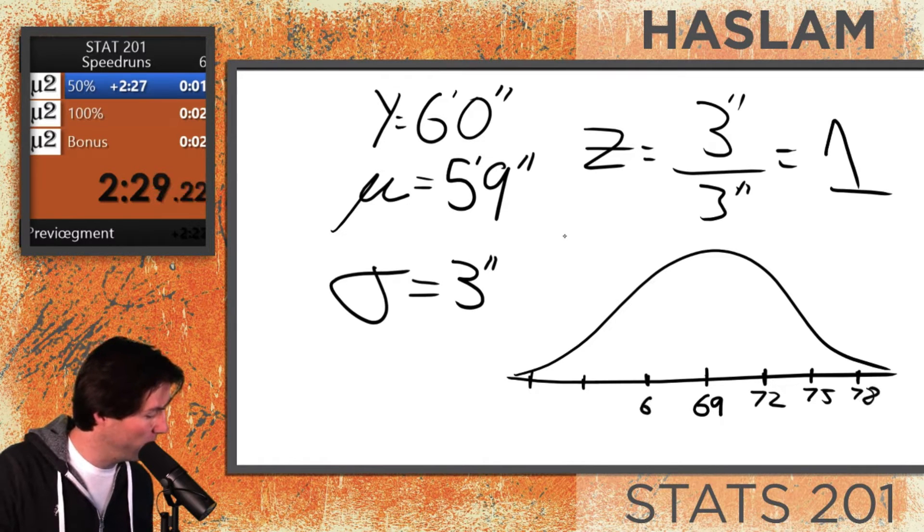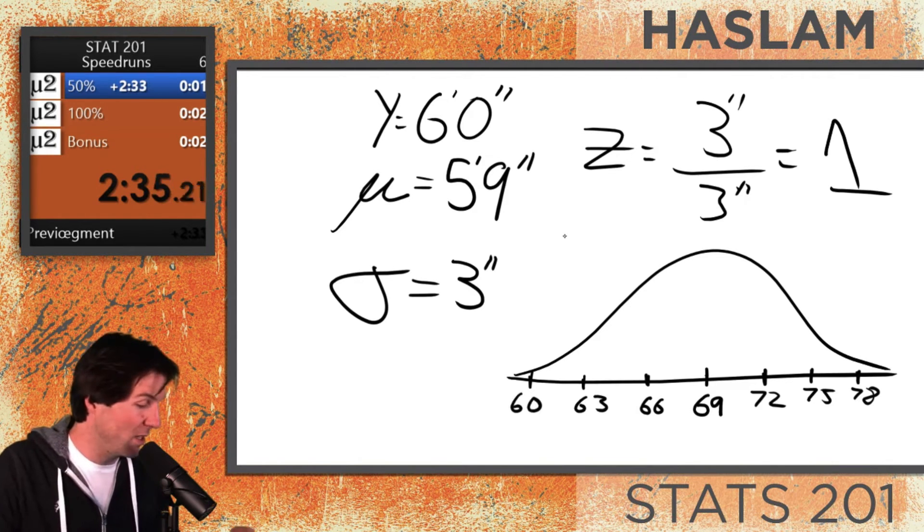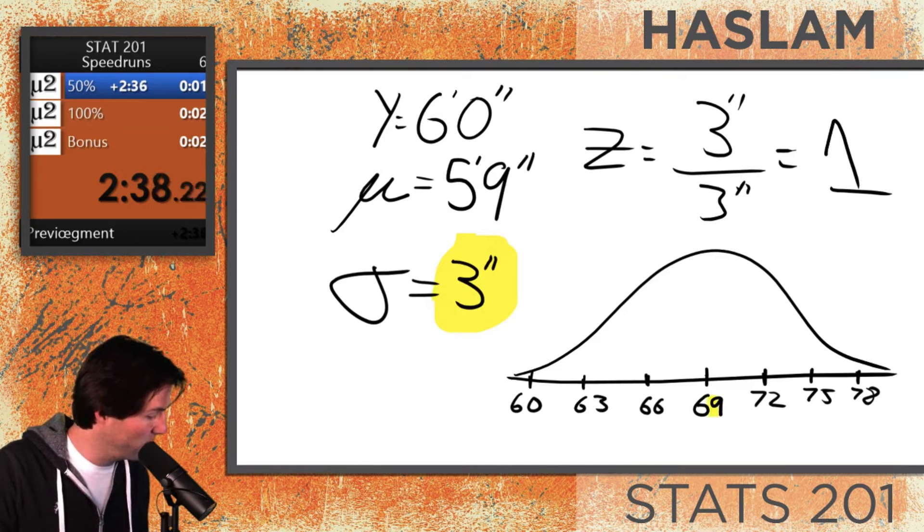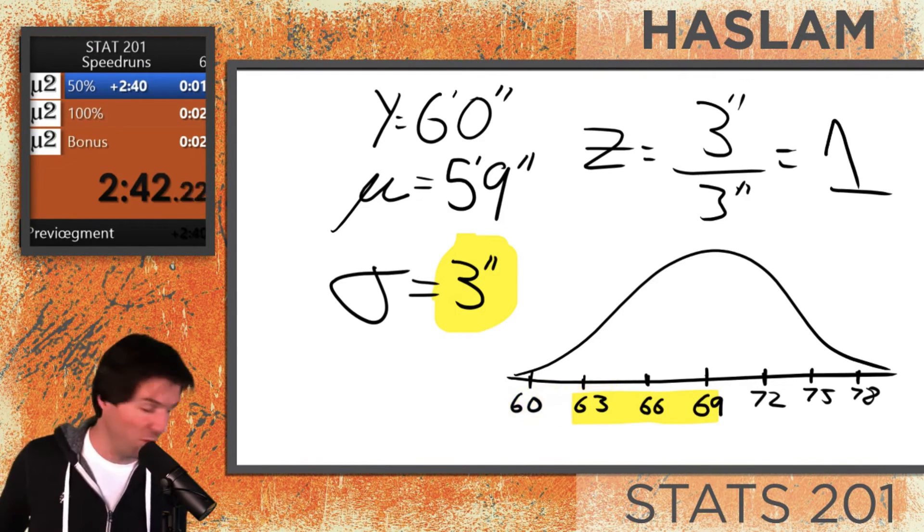If you notice, all I'm doing is going up and down a certain amount of standard deviations, three standard deviations. My standard deviation was three, and that's how I knew to make all of these distances a distance of three.